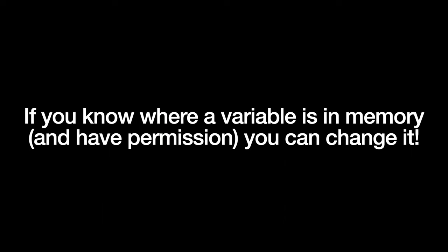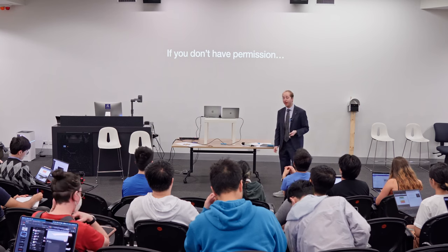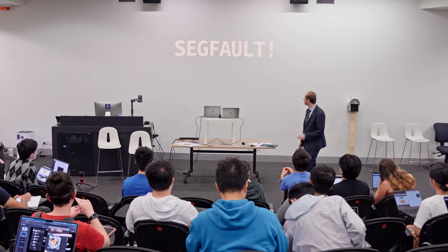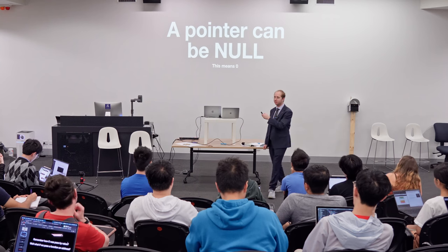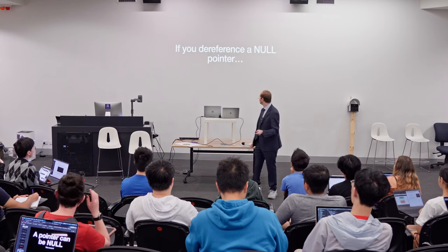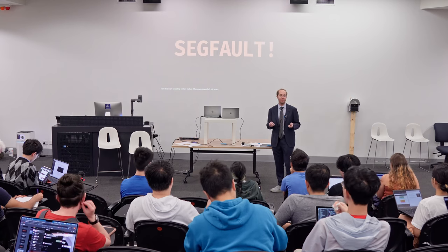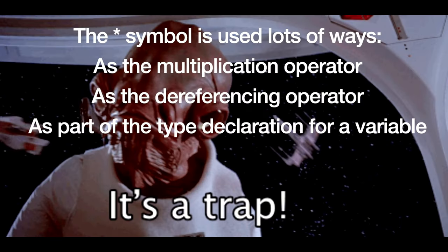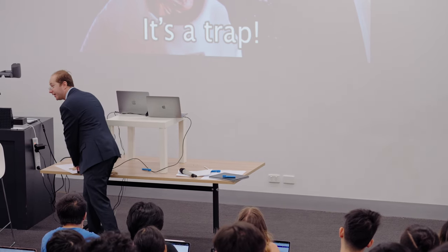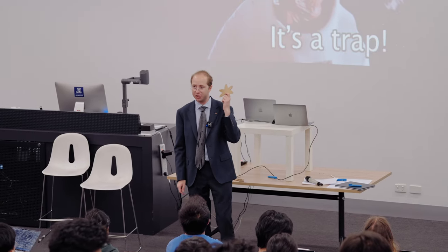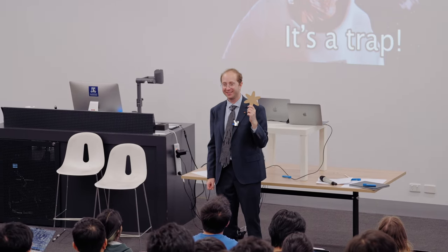If you know where a variable is in memory and you have permission to touch it — if it's part of your same program — then you can change it. If you don't have permission: segfault. A pointer can be null, and if you try to dereference a null pointer, segfault — that's a feature of the operating system. Just remember: the asterisk symbol is used in lots of ways. Way number one: multiplication. Way number two: dereferencing. Way number three: declaring a pointer type.